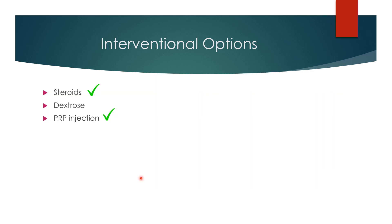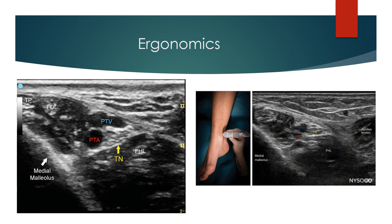The interventional options include steroids (most commonly performed), PRP injection into the plantar fascia, and very rarely dextrose as an intervention. Prior to any intervention on the plantar fascia, particularly a painful PRP injection, always perform a posterior tibial nerve block with the patient supine, so there is no pain during or after the procedure — which is most important for a PRP injection.